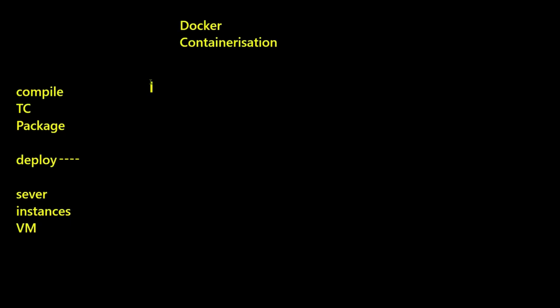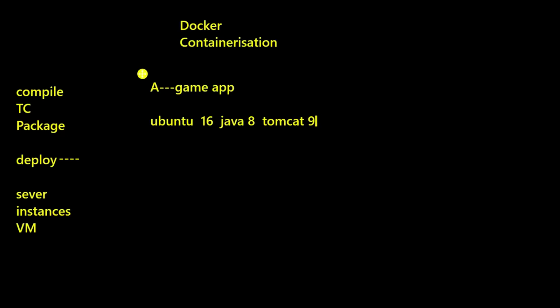Let's suppose you have an application. There's a Company A which has developed a gaming application, and this application has some prerequisites. It will only work on Ubuntu 16, with Java 8 and Tomcat 9. These are the prerequisites — it works only in this specific environment.